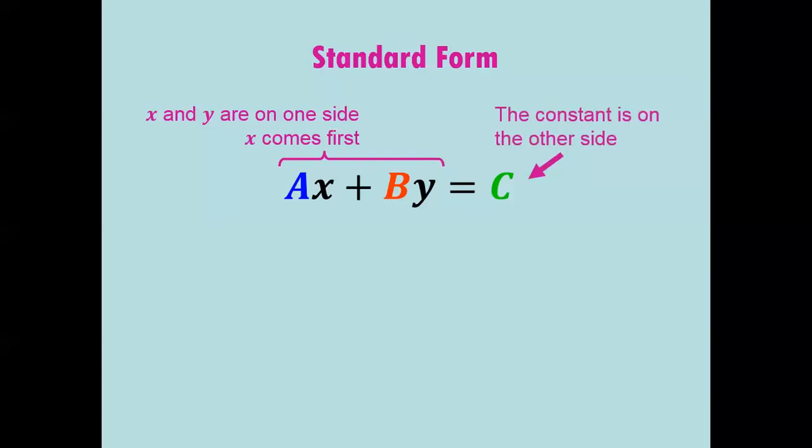Our last form is called standard form. It's a little bit different. You can see that it's got the x term and the y term on the left, and it's important that the x term come first. And then on the right side of the equal sign is the constant.